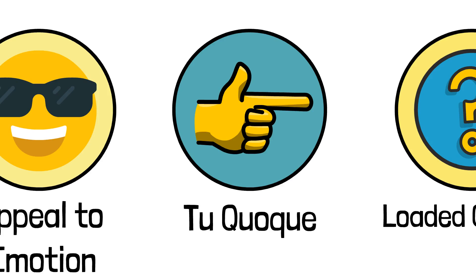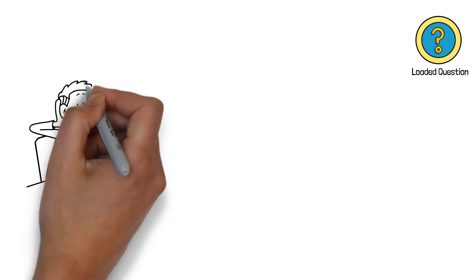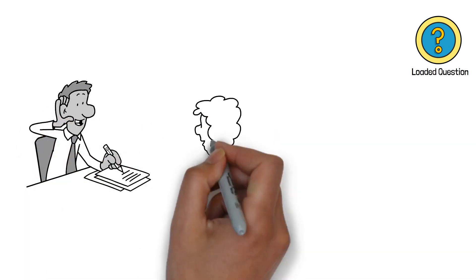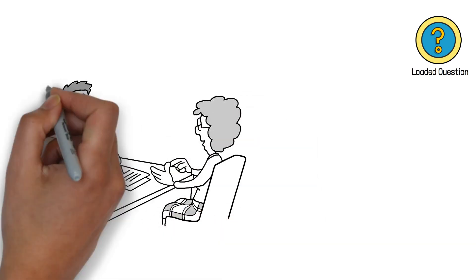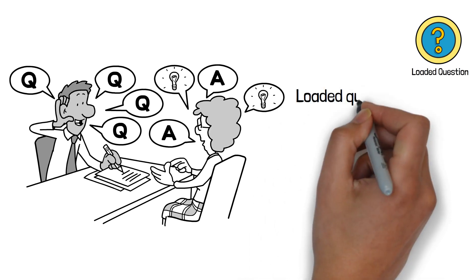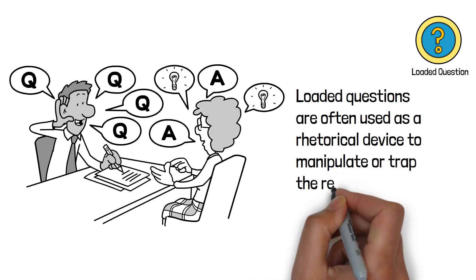14. Loaded Question. This fallacy involves asking a question that contains an unjustified assumption or presupposition. It puts the person being questioned in a difficult position where any answer they provide would confirm the assumption embedded in the question. Loaded questions are often used as a rhetorical device to manipulate or trap the respondent.